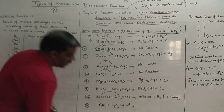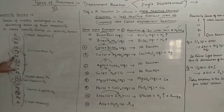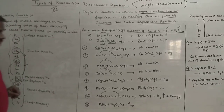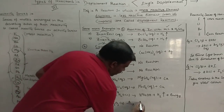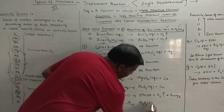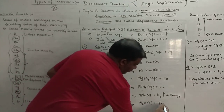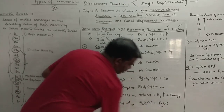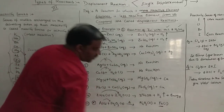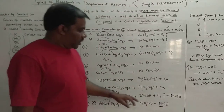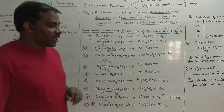Now, Al plus Fe₂O₃. This is a very important reaction which is also called a thermite reaction. Aluminium is above iron in the reactivity series, so aluminium displaces iron to form aluminium oxide (Al₂O₃), and iron is obtained in molten or liquid form. This molten iron is used for welding railway tracks together and for joining broken machine parts.